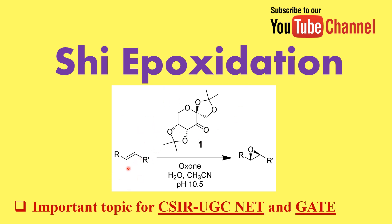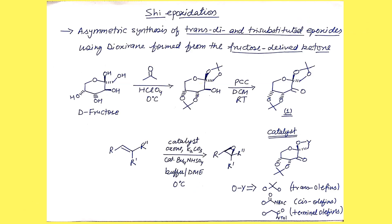So what is Shi epoxidation? As this figure clearly illustrates, it is used for the oxidation of olefins, and what you get is an absolutely high enantioselectivity. The catalyst used is the fructose-based dioxirane. Basically, Shi epoxidation is generally used for the asymmetric synthesis of trans di- or tri-substituted epoxides using a dioxirane which is formed from a fructose-derived ketone.